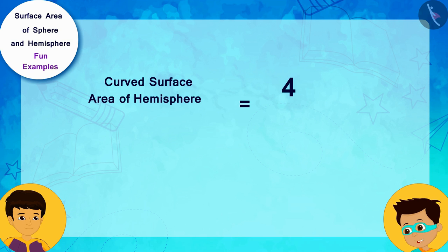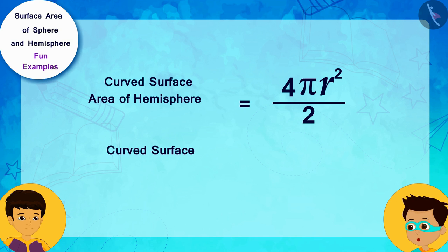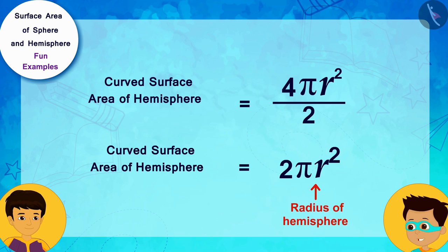That is, 4πr² divided by 2. In this way, the curved surface area of the hemisphere is 2πr², where r is the radius of the hemisphere.